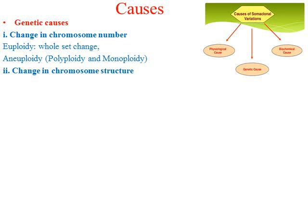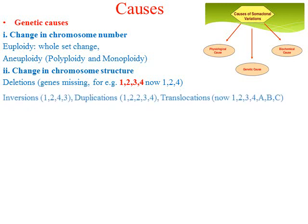The second genetic cause is change in chromosome structure — where the chromosome number remains the same but the structure changes. For example, if the mother plant has genes 1, 2, 3, 4 and the new regenerated plant has genes 1, 2, 4 — meaning gene 3 is missing — then we call that deletion.